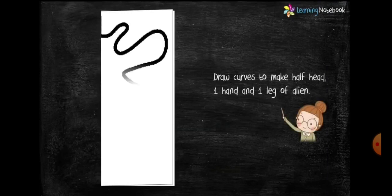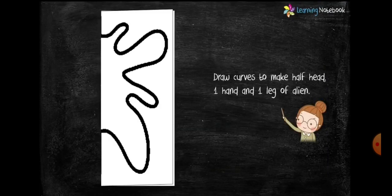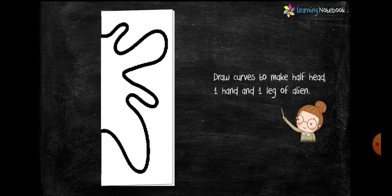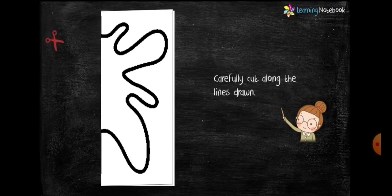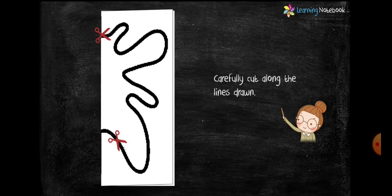Now students, draw curves on this sheet to make half head, a hand, and a leg of alien. Now using scissors, carefully cut along these lines.